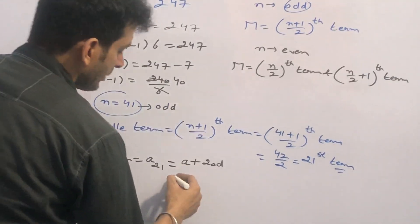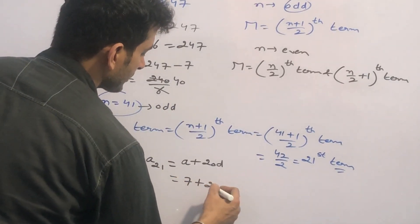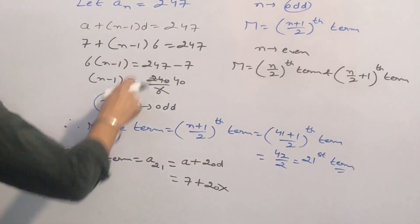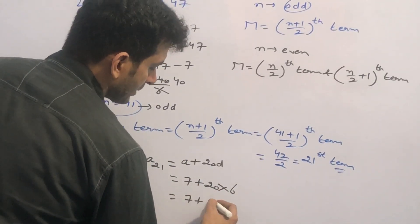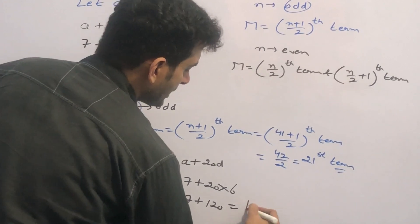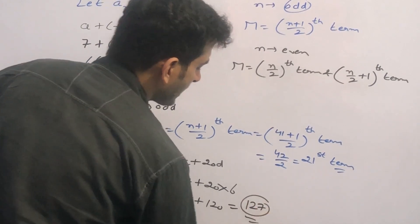Value of A is 7 and value of D is 6. So in place of A is 7 plus 120. So the right answer is 127. This is the final answer of this question.